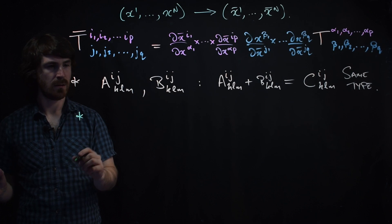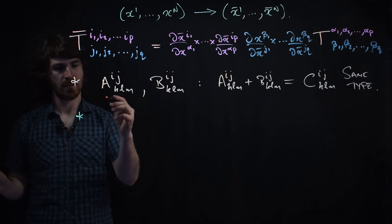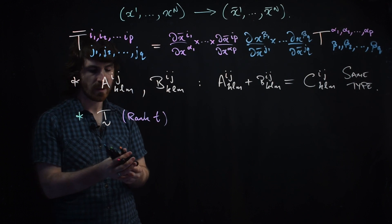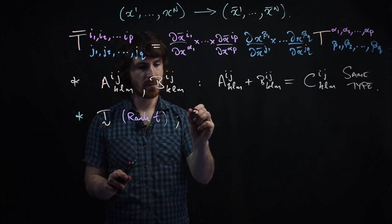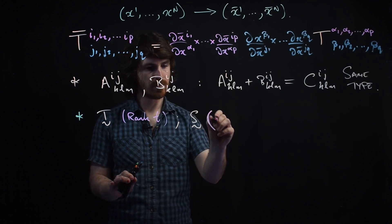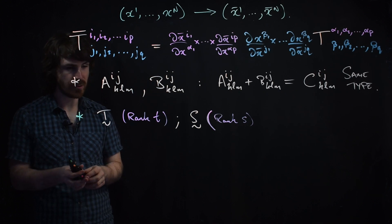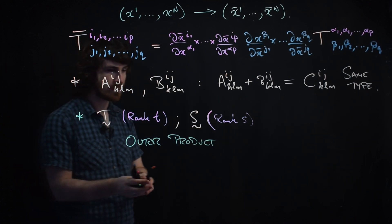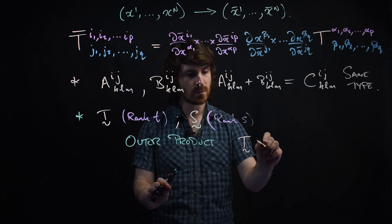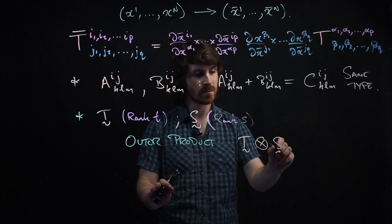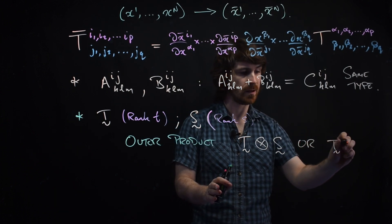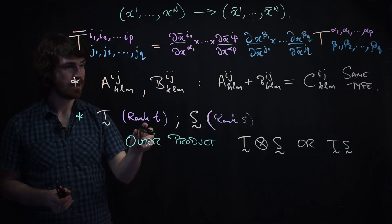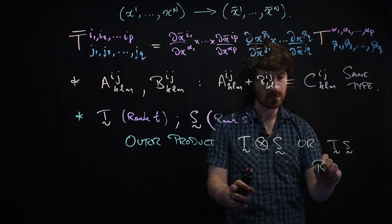We can do something more complicated. If we have a tensor T with rank t, and a tensor S with rank s, then we can form what's called the outer product. This outer product is denoted T⊗S, and it gives you a tensor that has rank t plus s.